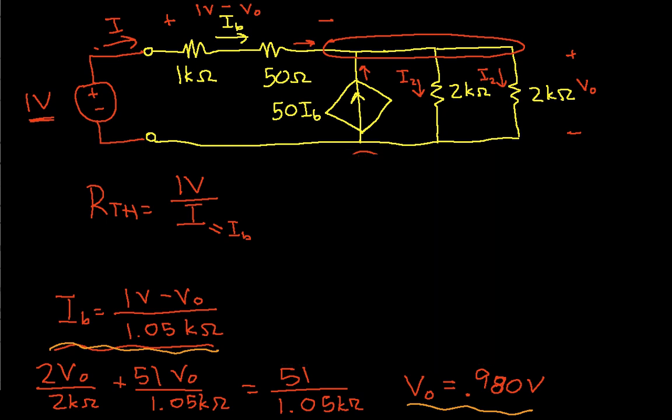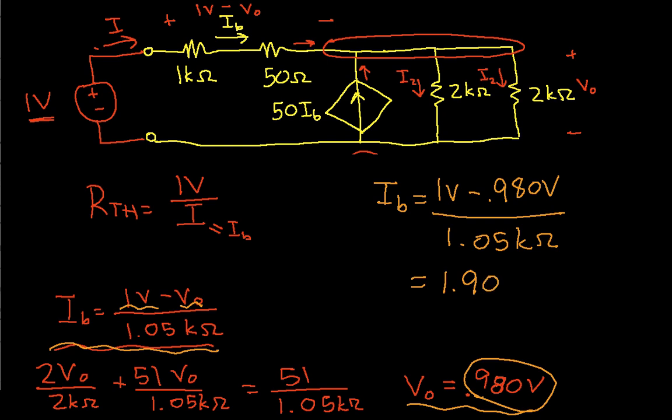We have then that IB is equal to 1 volt minus 0.980 volts, that's this 1 volt minus V0 and V0 is given by this, divided by 1.05k ohms, which when I work, I get that IB is 1.90 times 10 to the minus 5 amps. I can call that 19 microamps.